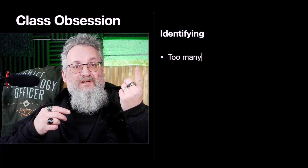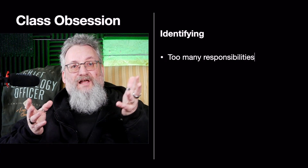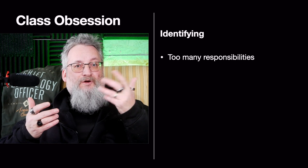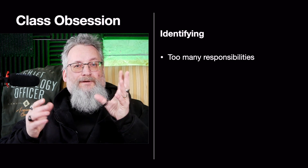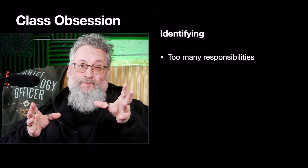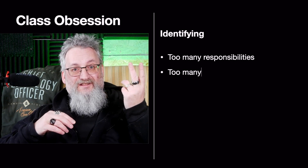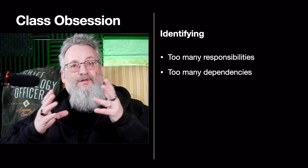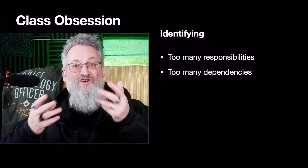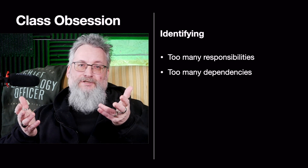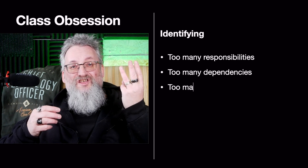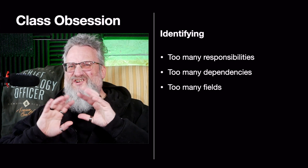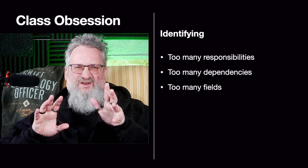Here are the dead giveaways. Too many responsibilities: if your class is handling authentication, validation, and email notification, you have a problem. Too many dependencies: if your class requires injecting half your application just to function, something's off. Too many fields: a class with 15-plus fields is trying to do way too much.